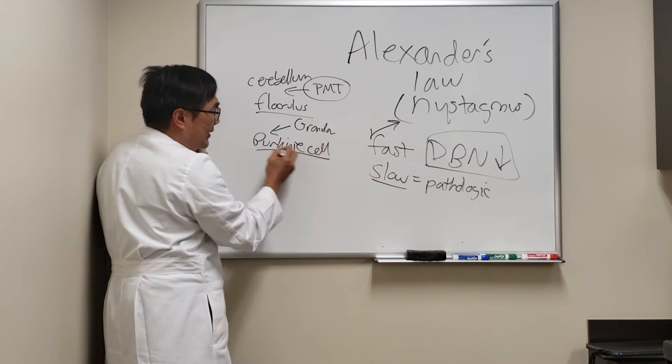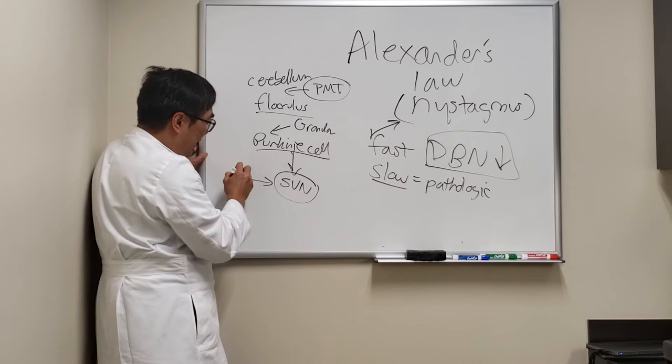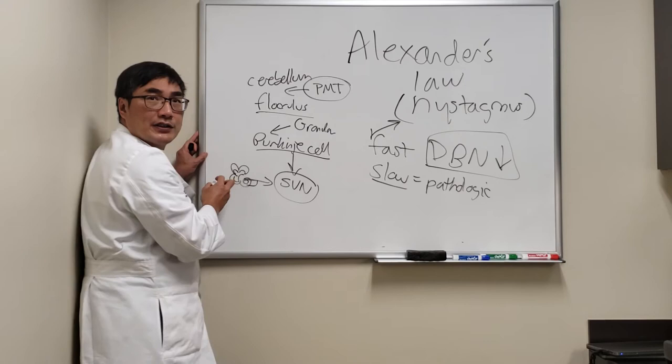This percini cell is going to talk to the superior vestibular nucleus that is also receiving innervation from your ear, but not the hearing part of your ear, the vestibular portion of your ear.